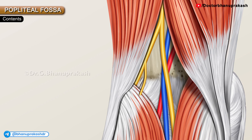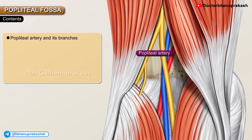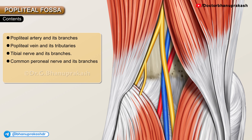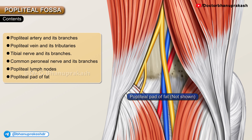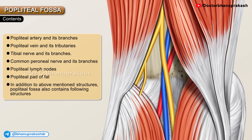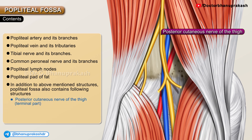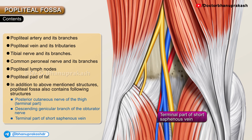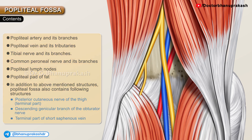The main contents of the popliteal fossa are the popliteal artery and its branches, the popliteal vein and its tributaries, the tibial nerve and its branches, the common peroneal nerve and its branches, popliteal lymph nodes, and popliteal pad of fat. Additionally, the fossa contains the terminal part of the posterior cutaneous nerve of the thigh, the descending genicular branch of the obturator nerve, and the terminal part of the short saphenous vein.